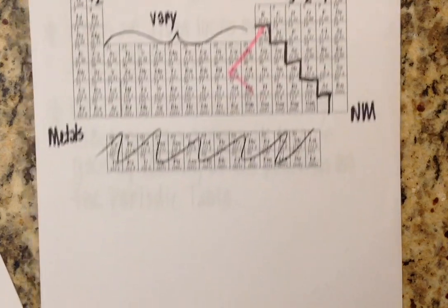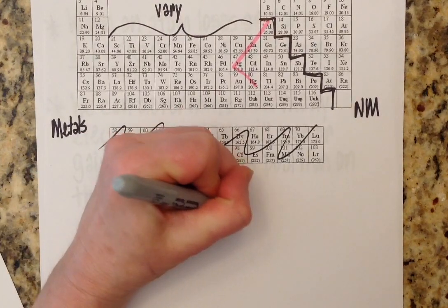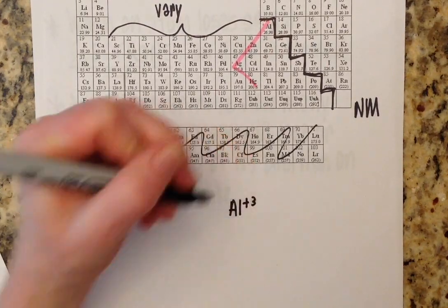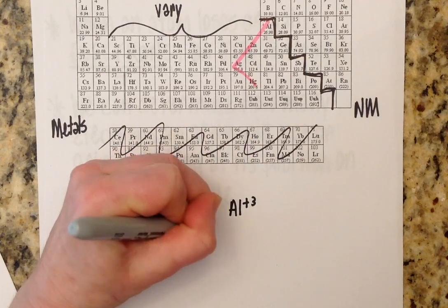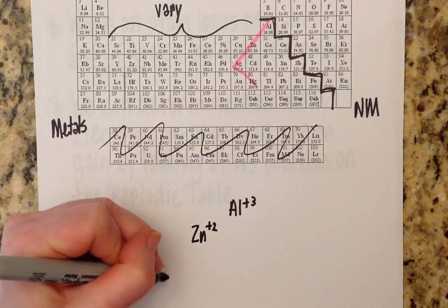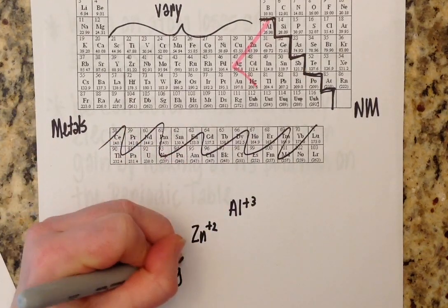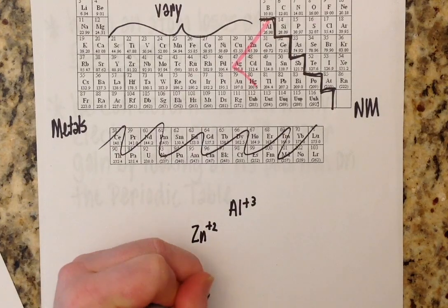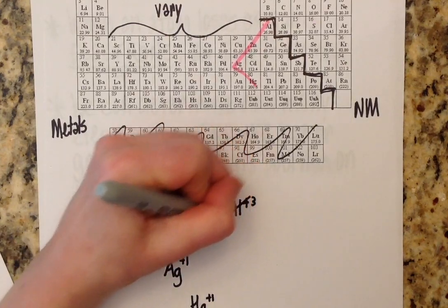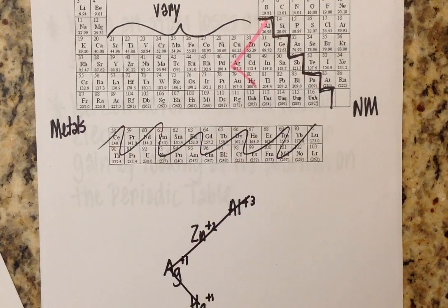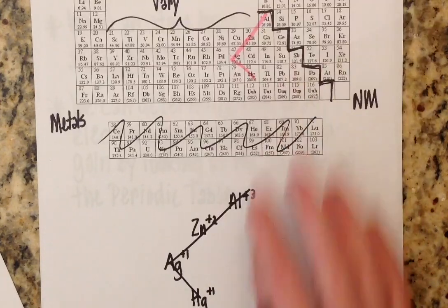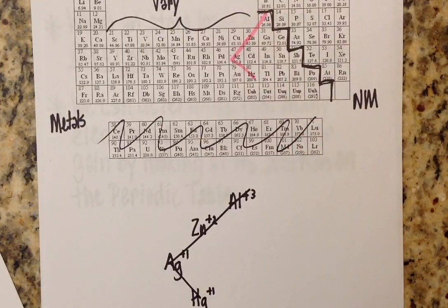So you could make a note here. It kind of looks like this. Aluminum is always a plus three. Zinc is always a plus two. Silver is always a plus one. And mercury is always a plus one. So three, two, one, one is a great way to remember those exceptions.